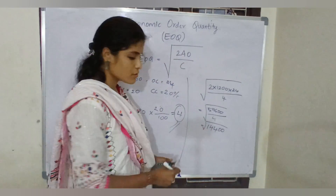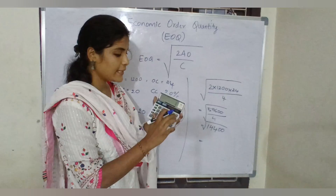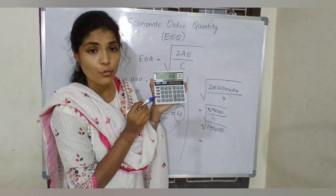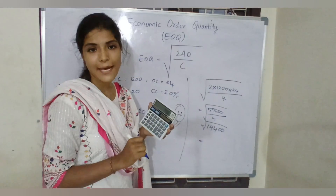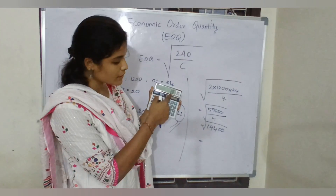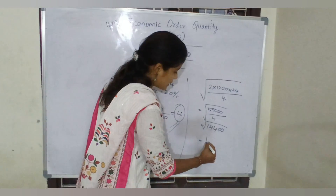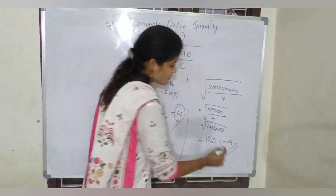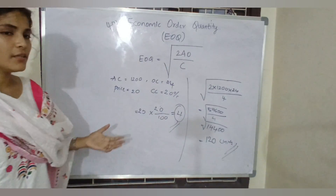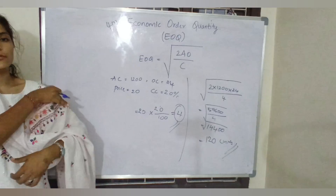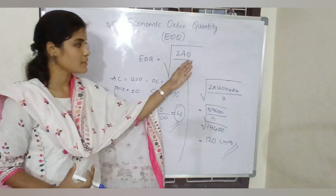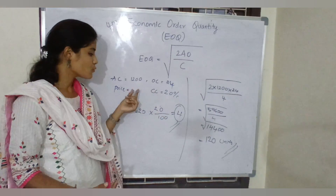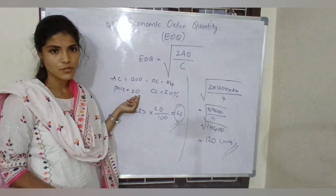Type 14,400 in your calculator and press the square root symbol. You will get 120. So 120 units is your EOQ. That's it — this is simple. For the four-mark question, just remember the formula and remember to convert the carrying cost percentage into a number using the given price.